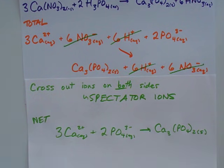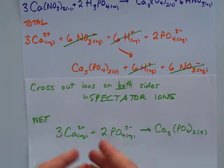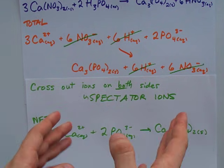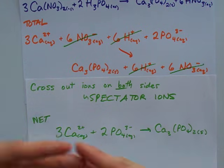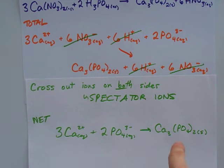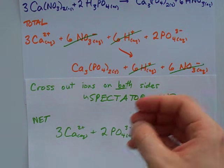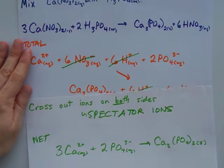The thing about the net ionic equation is that it is basically the precipitation reaction that happens here. You need the calcium, you need the phosphate, and you need them to come together to form and precipitate the solid calcium phosphate. And again, we know that's solid because of solubility rules.